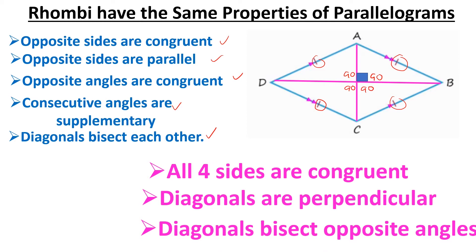Last, diagonals bisect opposite angles. For example, if this angle were 40 degrees, this angle would also be 40 degrees because they are congruent. Or if you're given the entire angle, you know that each half would be half of that angle — so if the entire angle were 100 degrees, each piece would be 50 degrees because the diagonal bisects the angle.